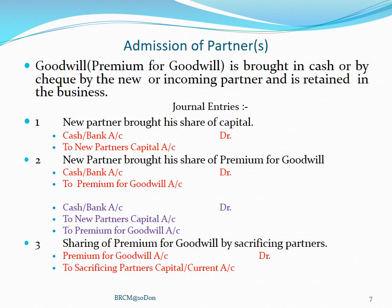Second situation: when goodwill is brought in cash or by cheque by the new or incoming partner and is retained in the business. This means the new partner came, brought his full share in cash or by cheque, and that money is kept in the firm itself — the sacrificing partners have not withdrawn it. When capital comes in, the entry is: cash or bank account debited to new partner's capital account. Then when the cash amount for premium for goodwill is brought, the entry becomes: cash or bank account debited to premium for goodwill account.